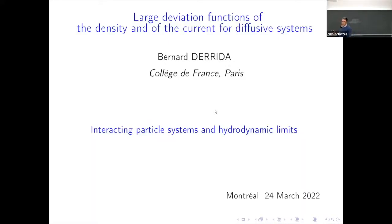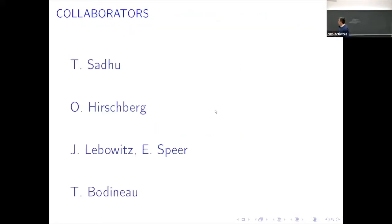I am going to present some works that we have been doing over the last two or three years, but it's a continuation of things which started many years ago. It has to do with large deviations for typically exclusion processes, but in the first part I will talk about a general Markov process. Most of the work comes from collaborations with Tridib Sadu and Uri Erjberg, but it is based on much older things with Joel Lebovitz, Gene Speer, and Thierry Bodino.